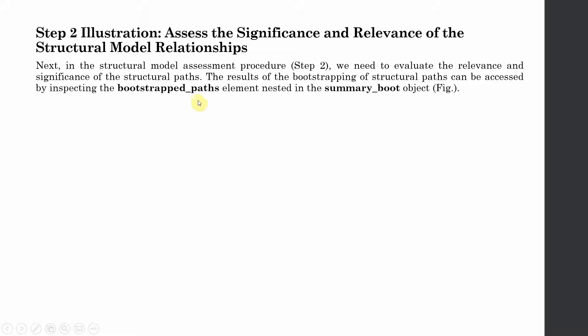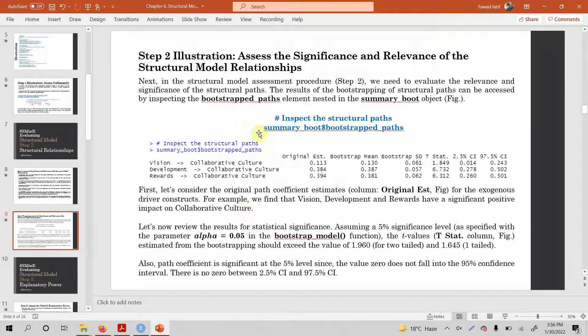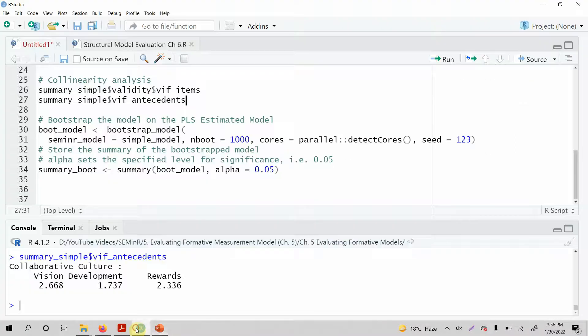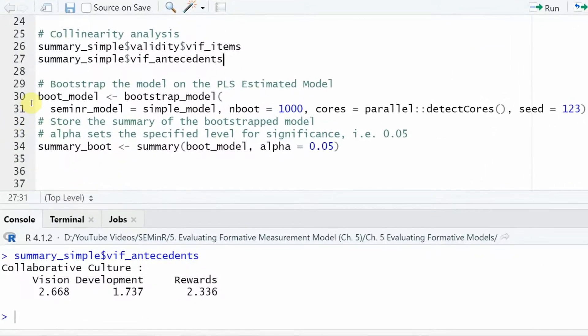We will have to bootstrap the model and then assign that bootstrap model to a summary object. Let's first do our bootstrapping. Where is our bootstrap? Here is your bootstrap model. Let's run it.